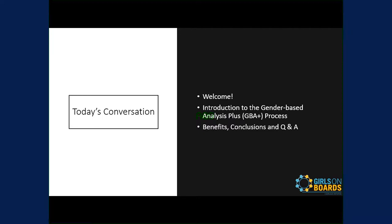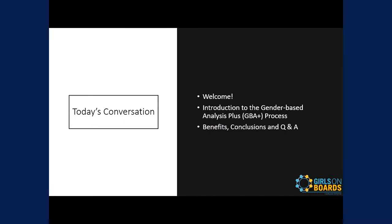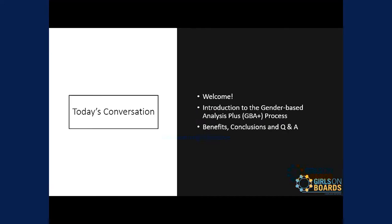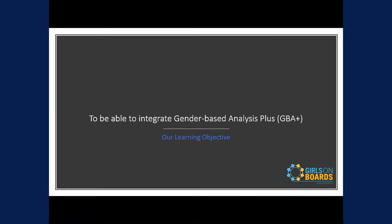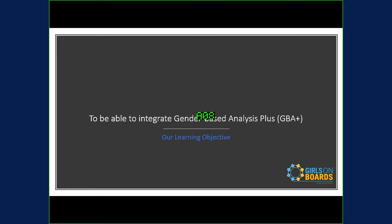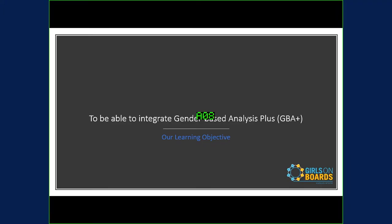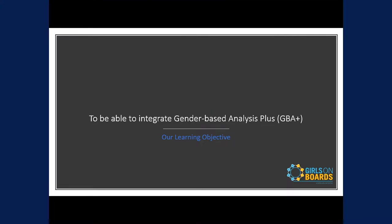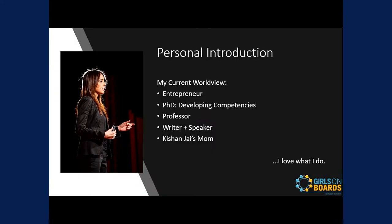Today's agenda: we'll do an intro to GBA+, what it is, why it's important, and why we include it. We'll go through each of the stages of GBA+ so you understand what each stage entails. We'll talk about the benefits, conclusions, and then open it up to Q&A. The main learning objective is to integrate GBA+ — whether in your academic studies, communication, or hosting an event — to think about how we communicate and how we develop and design programs. Gender-based analysis focuses on gender; the plus aspect focuses on different intersecting factors.